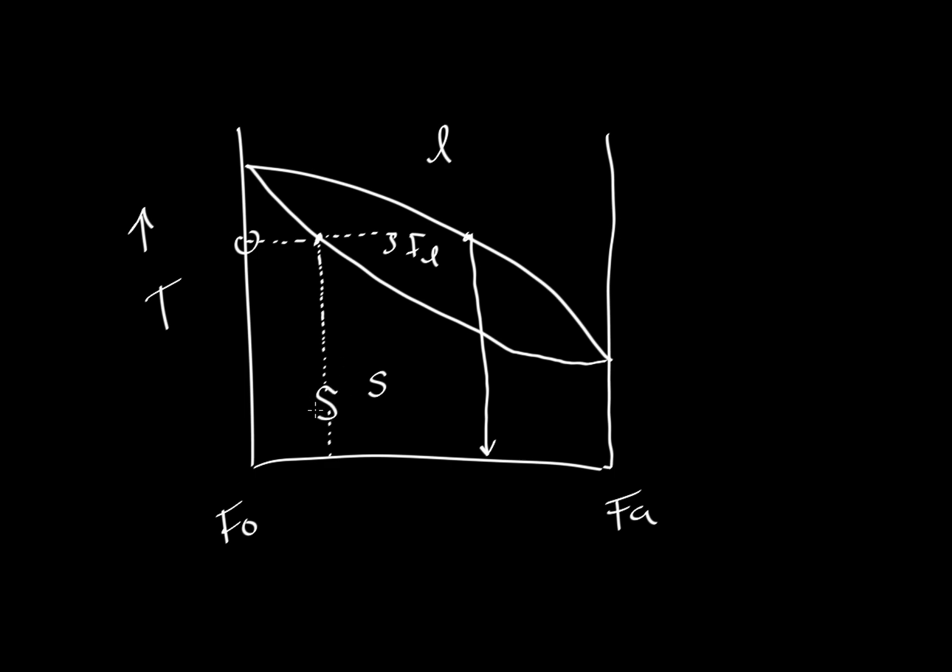We're going to take a solid of this composition, which is maybe XFA equals 0.3. So it's 30% fayalite, 70% forsterite, but the liquid that's going to come off of this is going to be much more iron-rich.